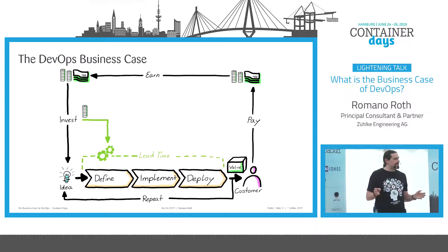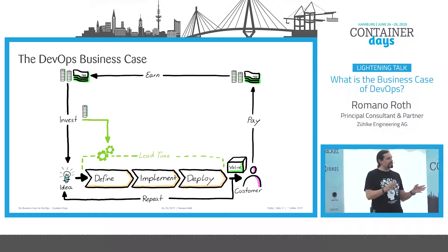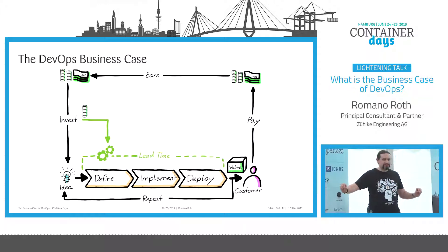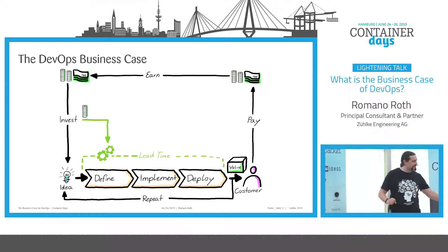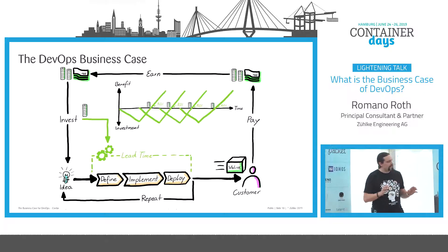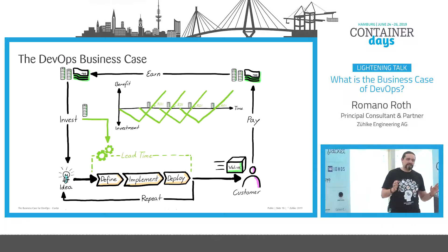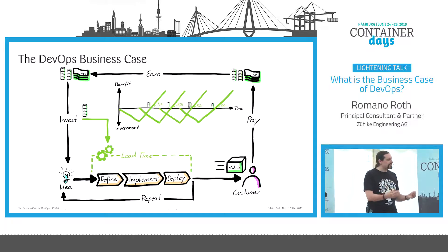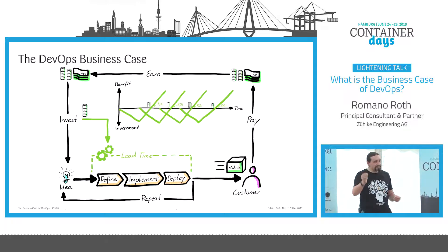To start the DevOps business case, we need to first invest some of the money — which we could invest into new ideas — into improving our value stream. We need to improve the lead time of this value stream so that value flows faster through the system. When the value stream is improved, we have a faster path from definition through implementation to deployment, the lead time has massively improved, and we are able to release more often into production, bringing features faster to our customers for a faster return on investment.